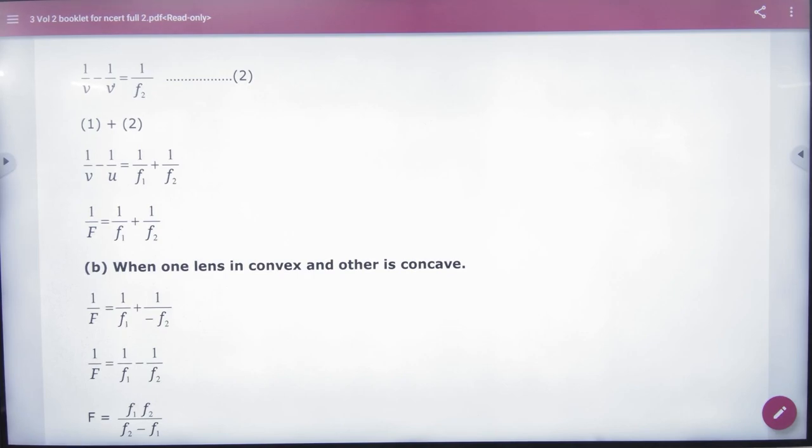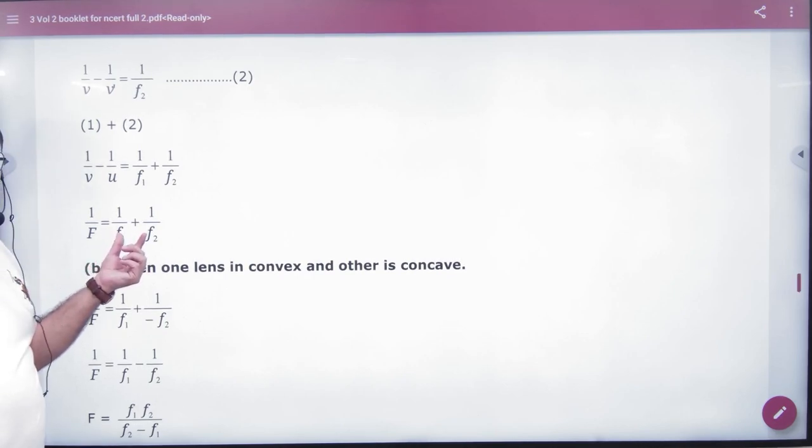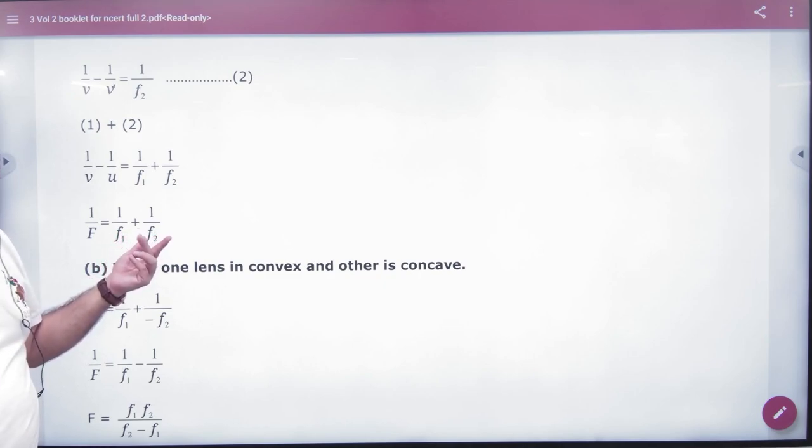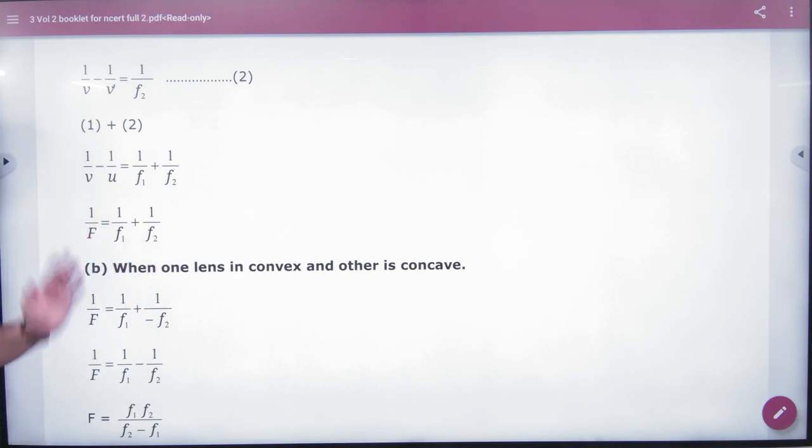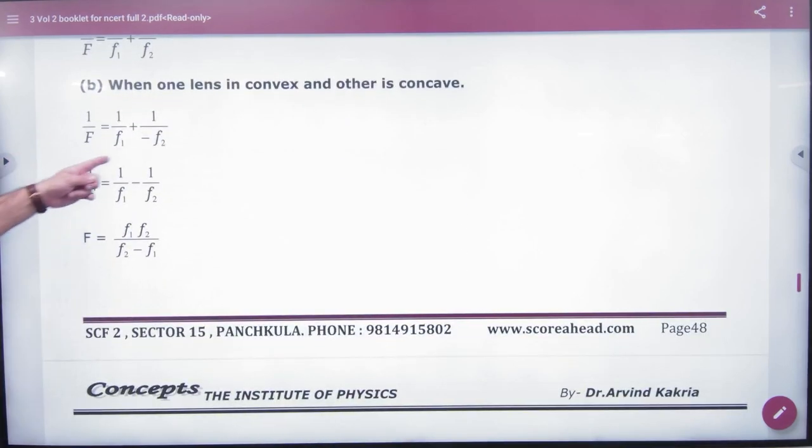This is the assumption that both lenses are convex lenses, so F1 and F2 sign convention is positive. If a numerical comes and one lens is concave, then the sign convention is negative. If both are concave, then both are negative. So I have done an example here: one convex and one concave, one positive and one negative.